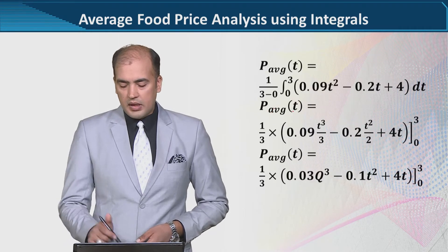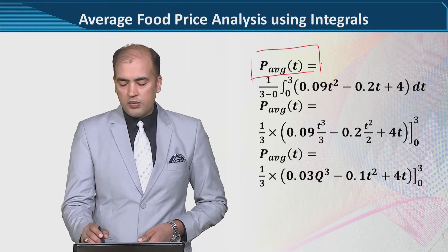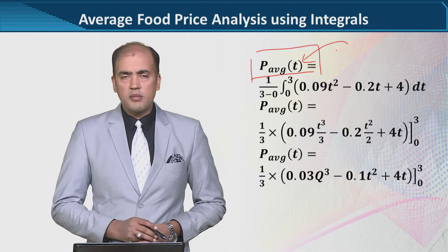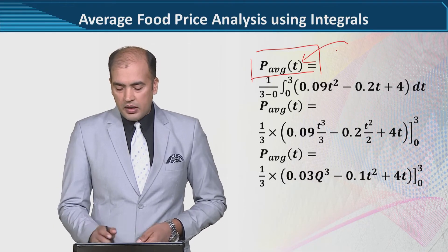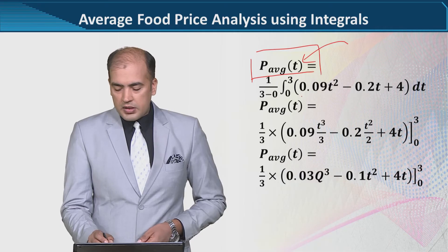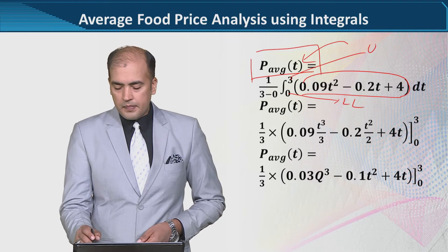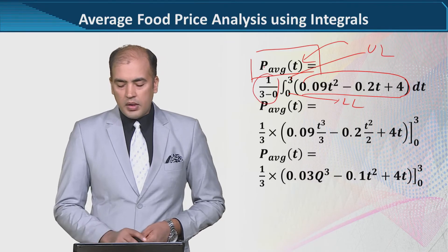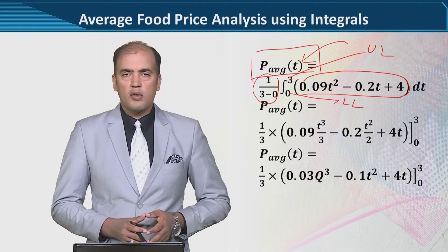Here you can see we have the price variable and time t wherever it is suitable. So here we have the function which is given over the limit, and this is the factor for the average of the overall function.